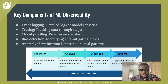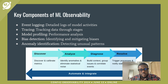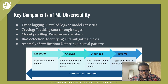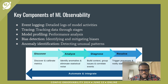What are the key components of machine learning observability? We have event logging, which deals with detailed logs of model activities; tracing, which involves tracking data through stages; model profiling, which involves performance analysis; bias detection, which involves identifying and mitigating biases; and anomaly identification, which involves detecting unusual patterns.